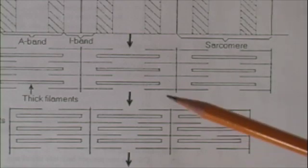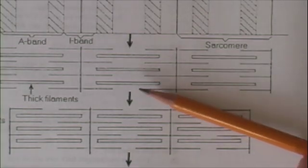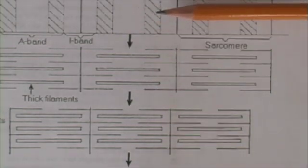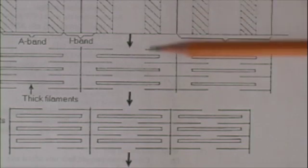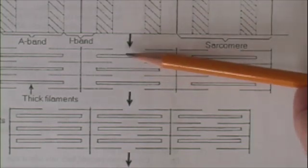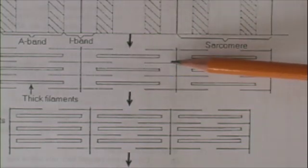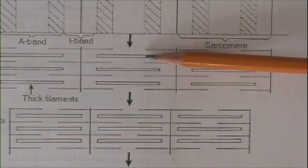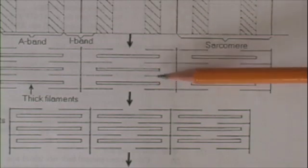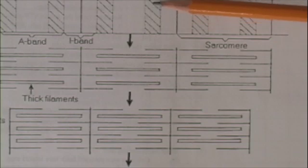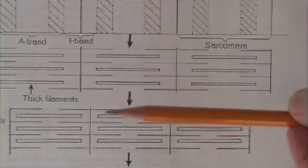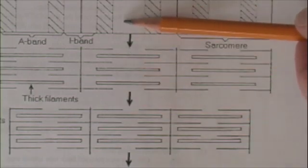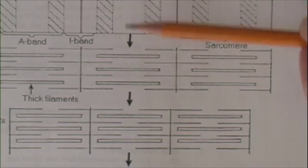With a little understanding of the arrangement of the thick and thin filaments, you can see where the light and dark bands come from. Notice that the thick filaments and the thin filaments overlap ever so slightly. Where they overlap gives the appearance of a dark band. Where they don't overlap gives the appearance of a light band.